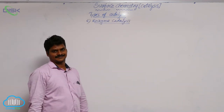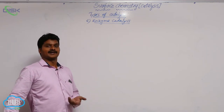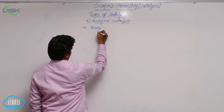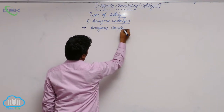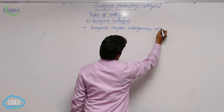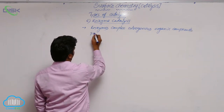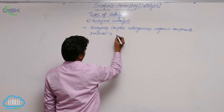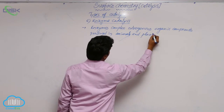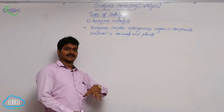What are enzymes? Enzymes are complex nitrogenous organic compounds produced in animals and plants — they are produced in living beings. These are complex, larger molecules containing nitrogen.